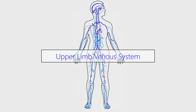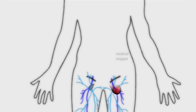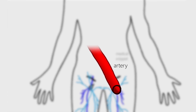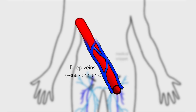Let's discuss the upper limb venous system. There are superficial veins and deep veins in the upper limb. The deep veins accompany the arteries of the upper limb. They are paired veins called venae comitantes. They are situated underneath the deep fascia.